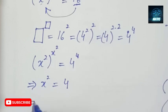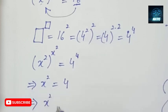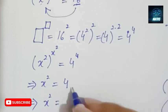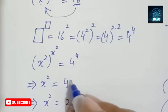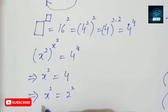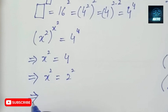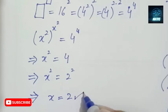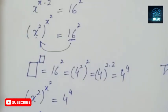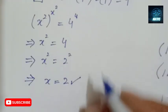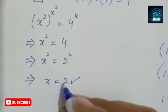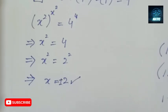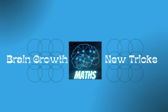From x squared equals 4, by taking the square root on both sides, this implies that x equals plus or minus 2. Thank you.